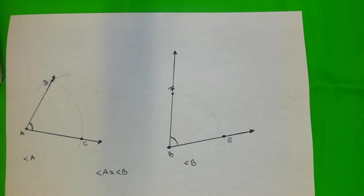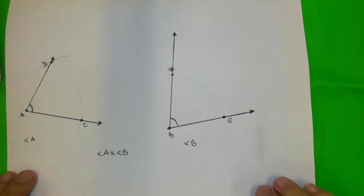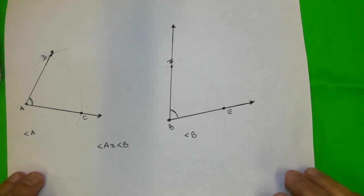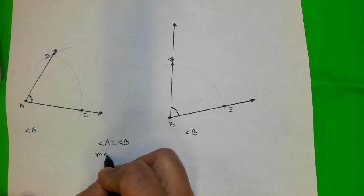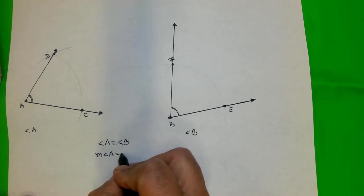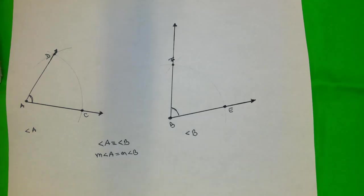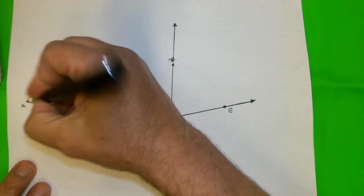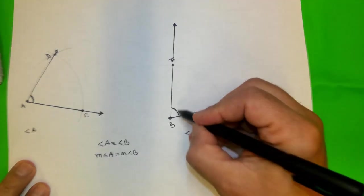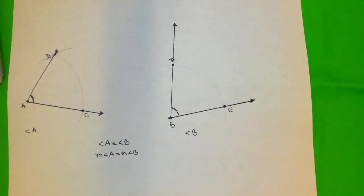Remember, this means congruent. And I mentioned they have the same measure. So, you can see these both statements. You can take a protractor and measure angle A and angle B, and you'll see they are the same.